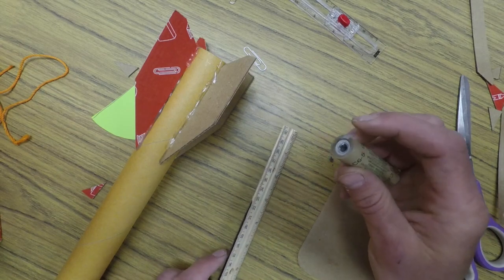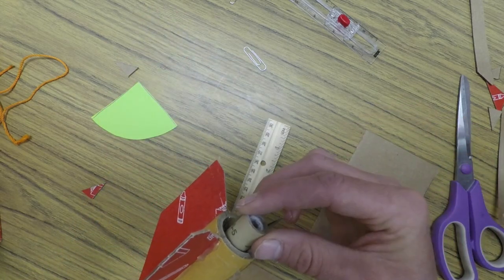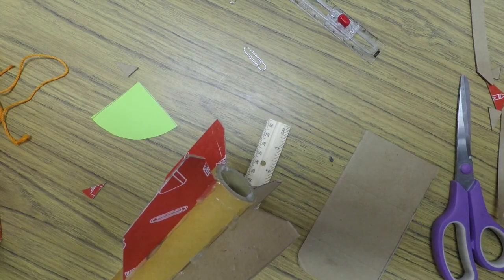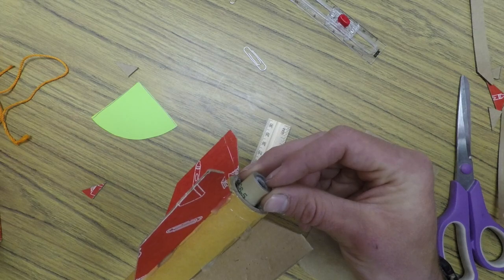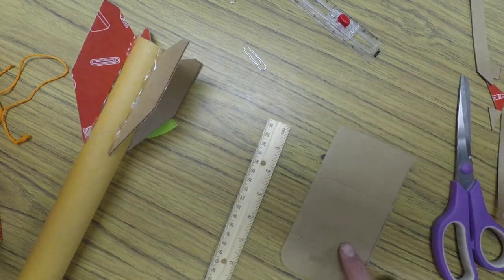You need to build a holder that will hold it in the end of the rocket so it won't go shooting through. I usually get any piece of cardboard.